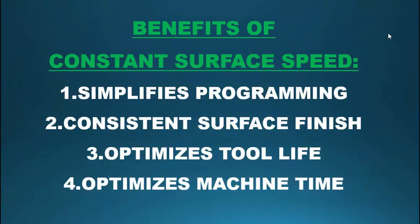The benefits of constant surface speed: it simplifies the programming because you don't have to determine what RPM to program. You just set the constant surface speed and the machine will automatically adjust the RPM depending on the diameter it's cutting. It also produces a consistent surface finish because the feed rate and constant surface speed work hand in hand.